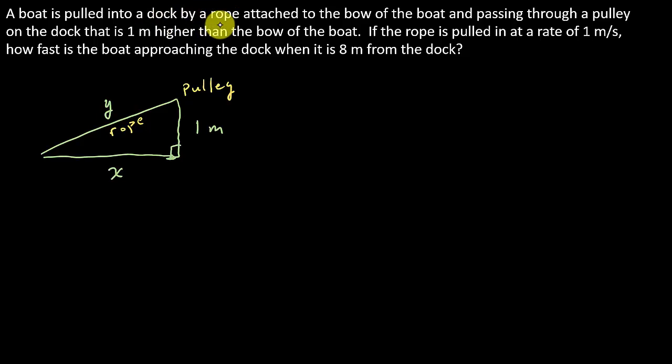So a boat is being pulled into a dock by a rope and passing through a pulley on the dock that is one meter higher than the bow of the boat. We've got that. That's one meter. If the rope is pulled in at a rate of one meter per second, that's DYDT is equal to, now, since it's being pulled in, and notice this length, it's getting shorter, we're going to say that's negative one meter per second.